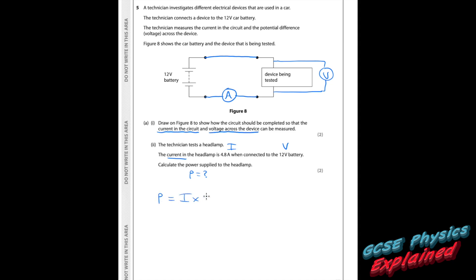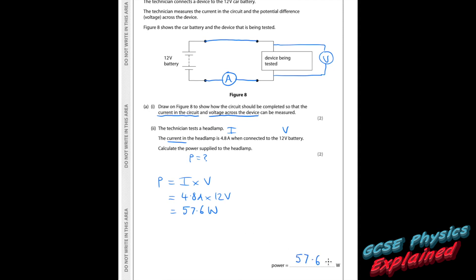Part 2. The technician tests a headlamp. The current in the headlamp is 4.8 amps when connected to the 12V battery. Calculate the power supplied to the headlamp. Power equals current times voltage. Substituting: 4.8 times 12 equals 57.6 watts. All power is measured in watts. The answer is given to one decimal place because the data values were to one decimal place.